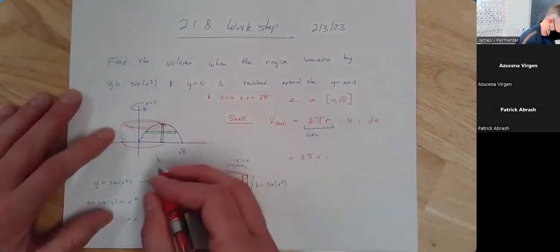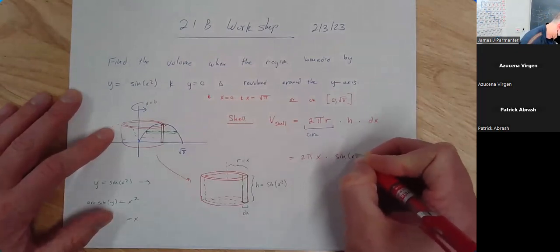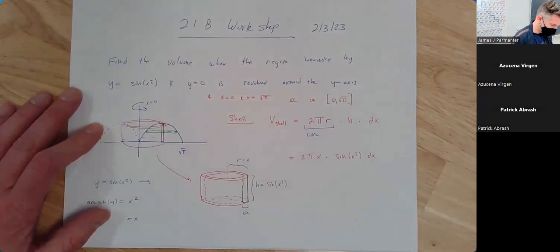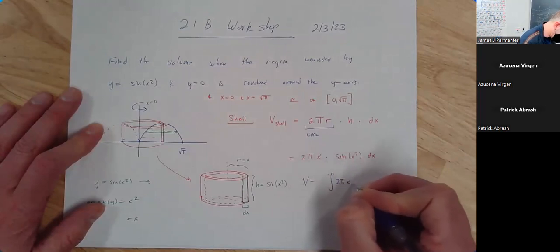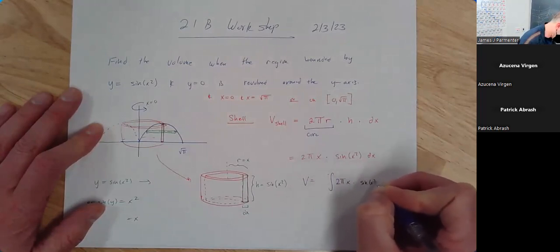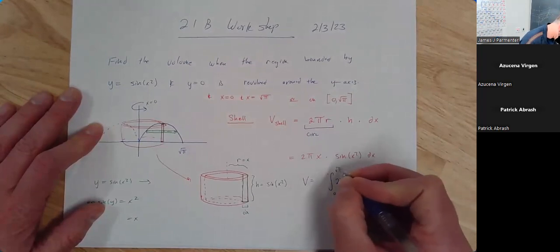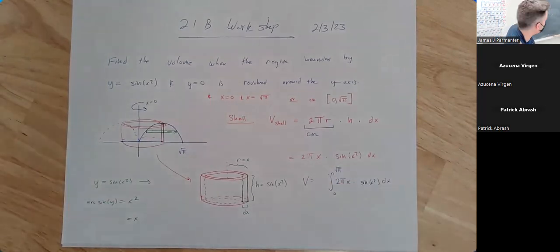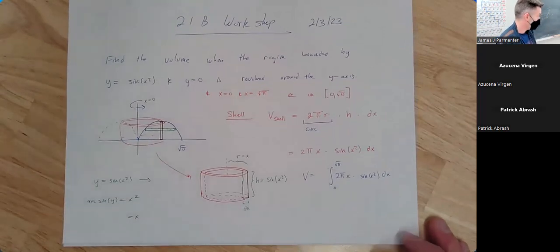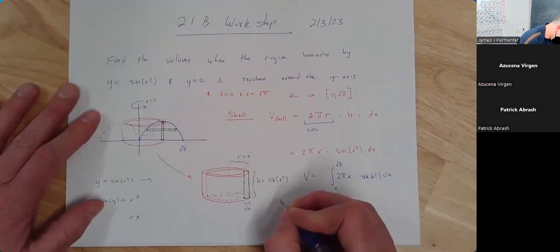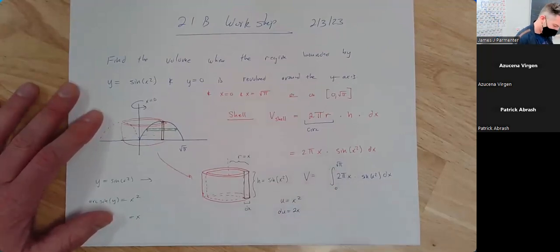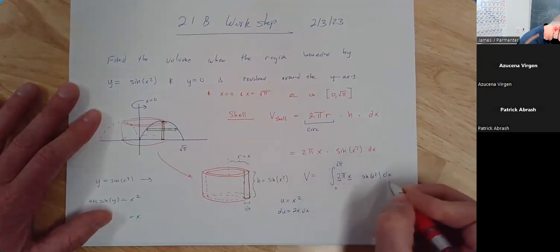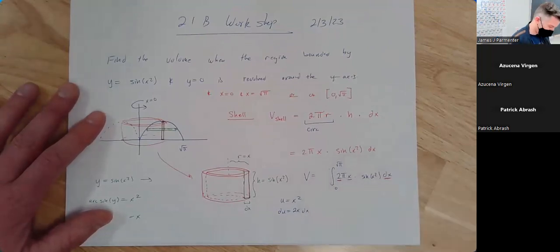So to finish off here, we have 2π·x times sine of x squared times dx. And then to find the actual volume, we would do the integral of 2π·x times sine of x squared dx from 0 to root pi. And then we could actually do this integral via u-substitution. We would let u equal x squared. Our du would equal 2x dx, and I see I have a 2x dx.